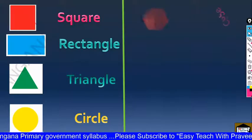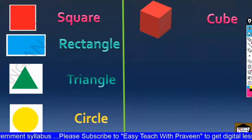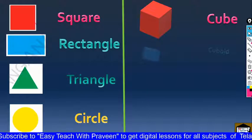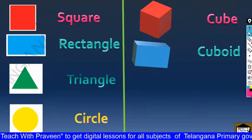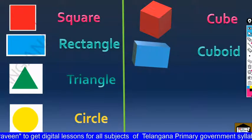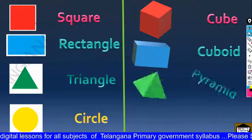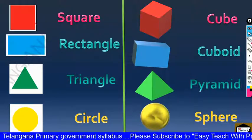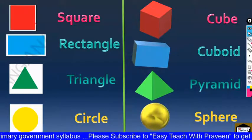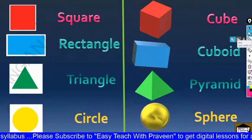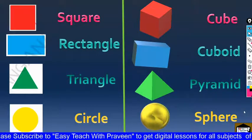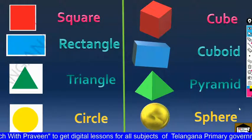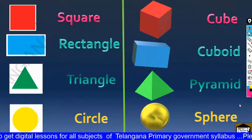This is the cube — same square lines, covered. Next is the cuboid. And this is the pyramid. And this is a sphere — like a marble. Marbles are spheres. These are the 3D shapes. Left side: 2D shapes — square, rectangle, triangle, circle. Right side: 3D shapes — cube, cuboid, pyramid, sphere.